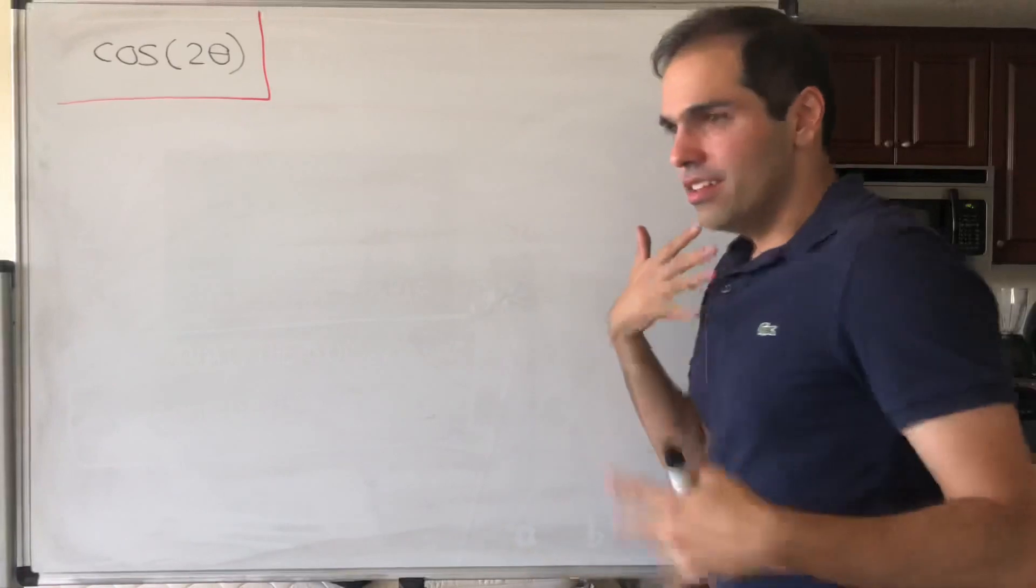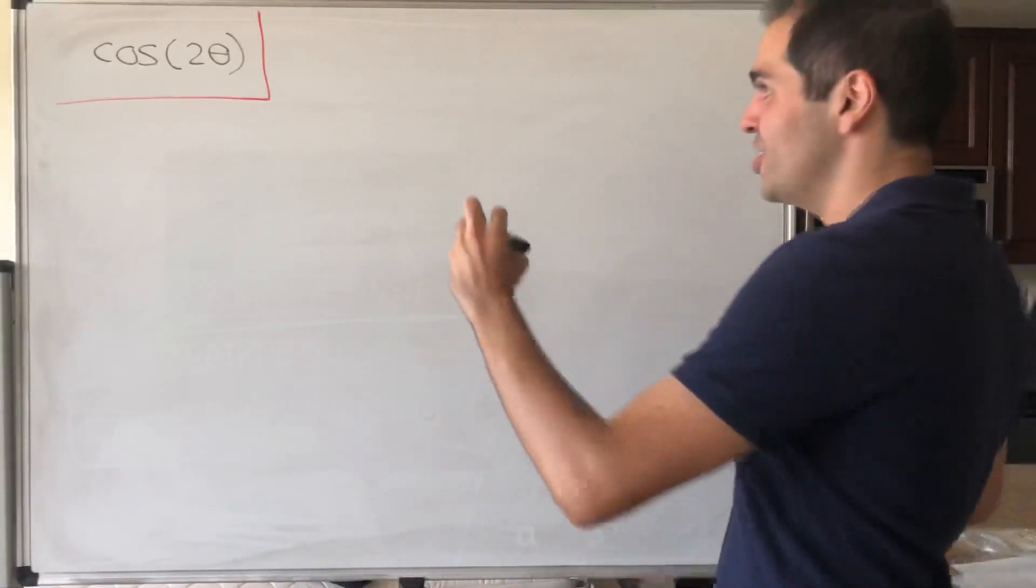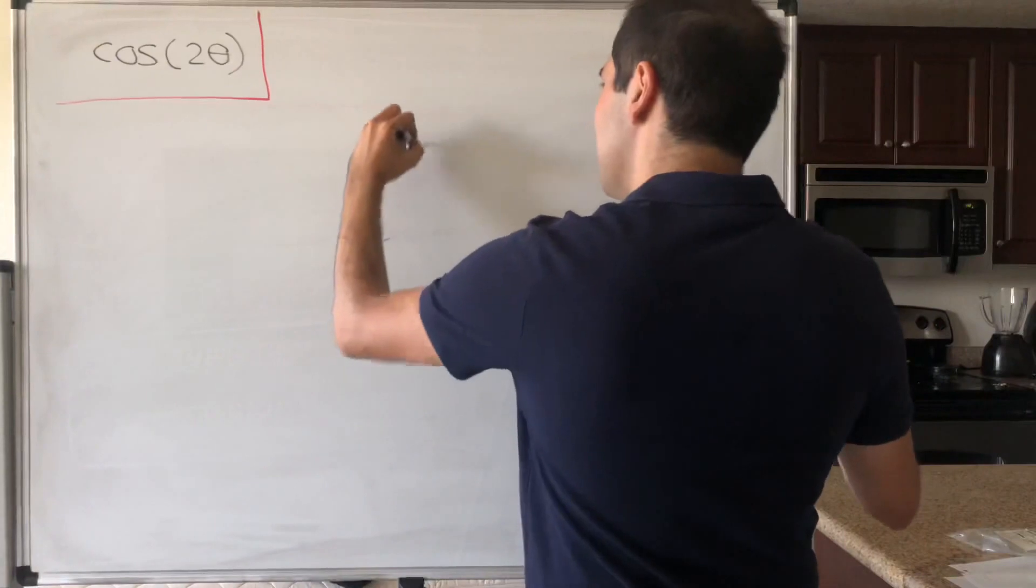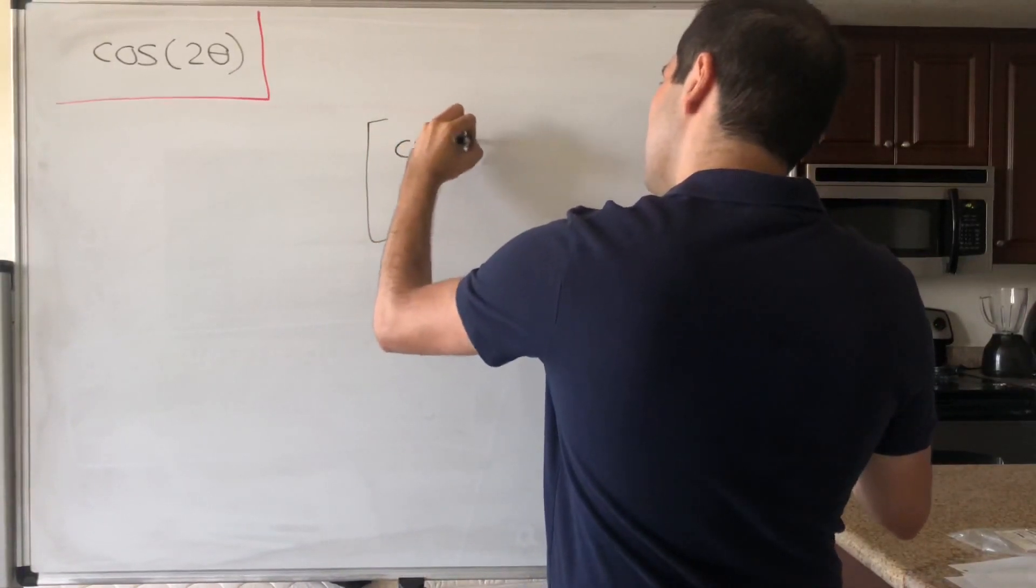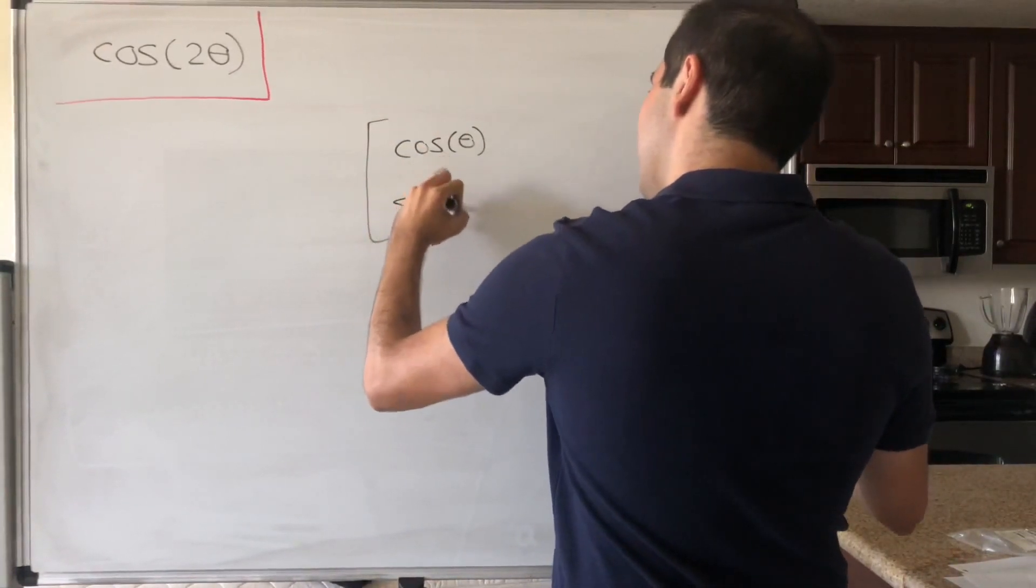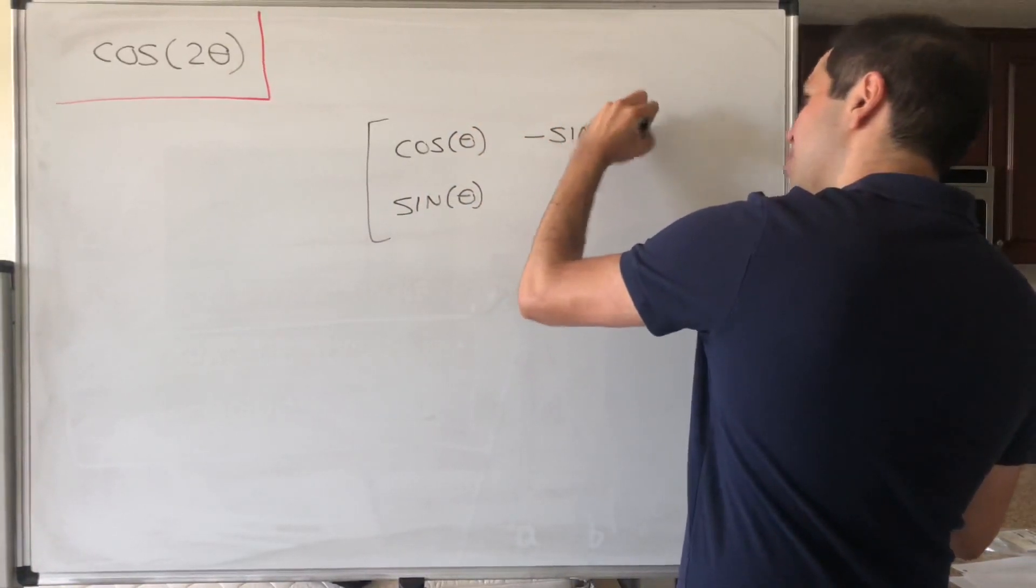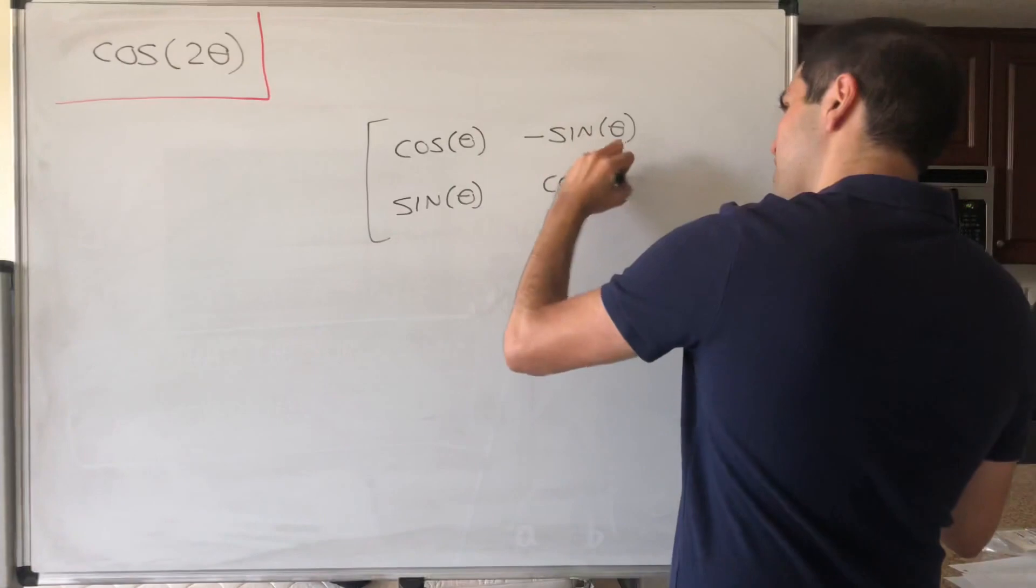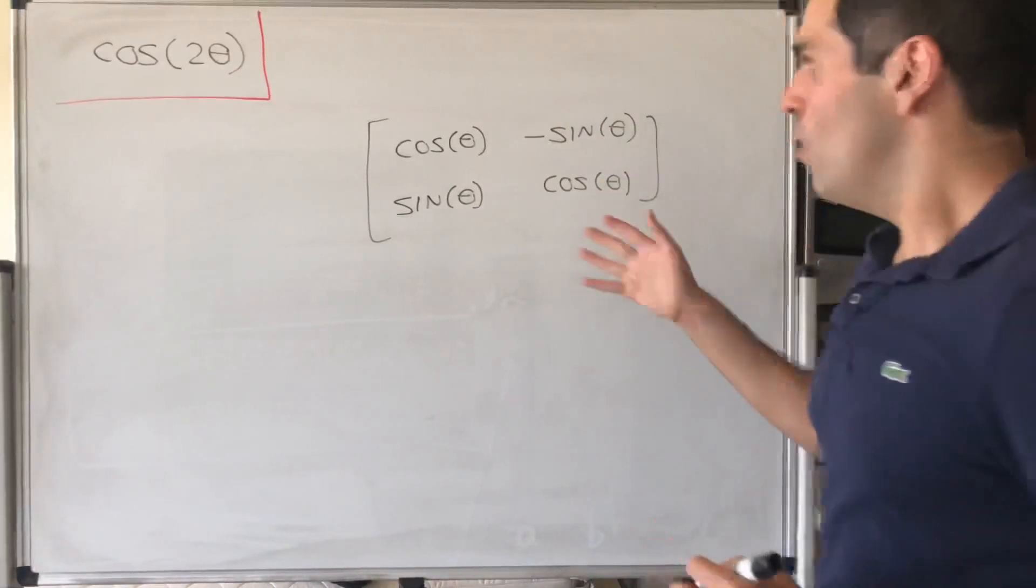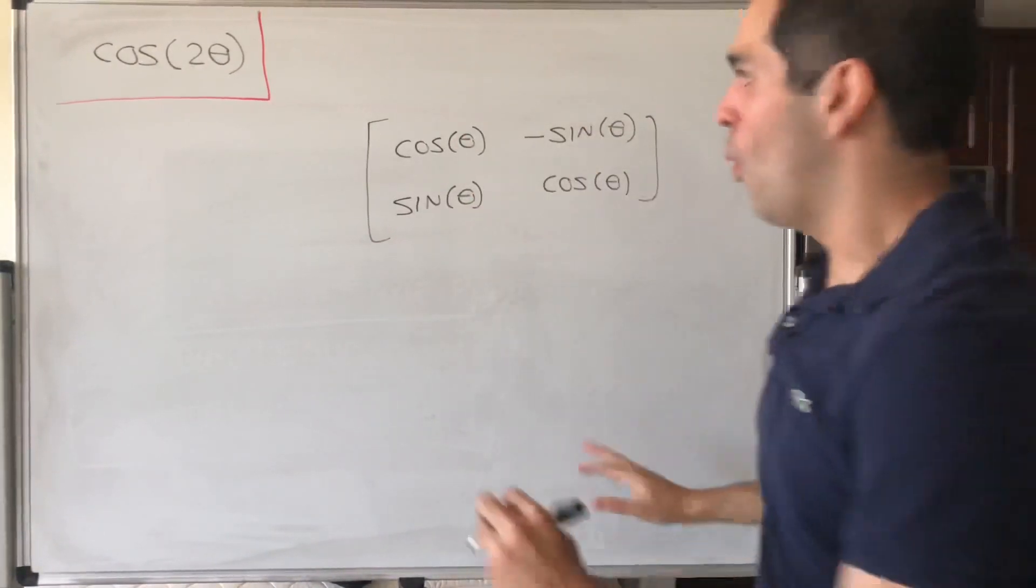So remember the formula for the rotation matrix, which is simply cosine of theta, sine of theta, and then you differentiate this, minus sine of theta, cosine of theta. Well, the question is, what happens when you apply it twice?